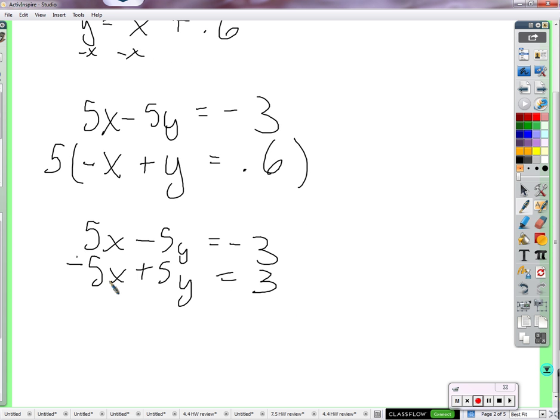So let's see what happens. We have together the 5x minus 5x is 0. Negative 5y plus 5y is 0. So that's new to this section, new to 7.5. Sometimes the left side of the equation will completely get wiped out. And it doesn't mean you did anything wrong.